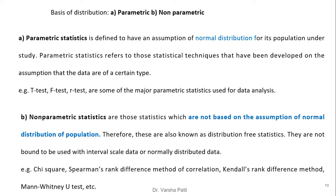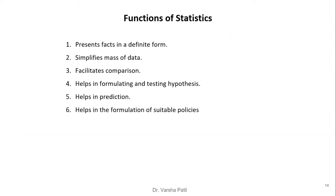On the basis of distribution, statistics is divided into parametric and non-parametric. Parametric statistics assumes a normal distribution for the population under study. The t-test, F-test, and r-test are major parametric techniques. Non-parametric statistics are not based on the assumption of normal distribution and are therefore called distribution-free statistics. They are not bound to interval scale or normally distributed data. Examples include chi-square and Spearman rank difference.